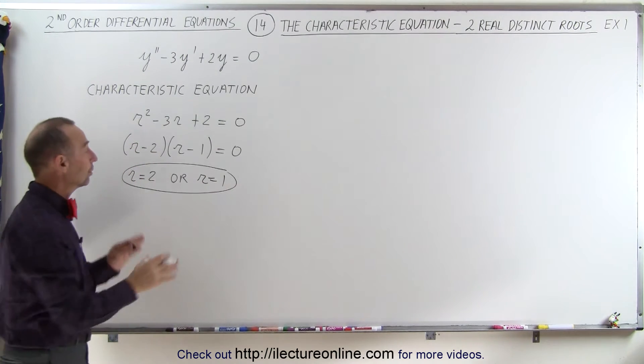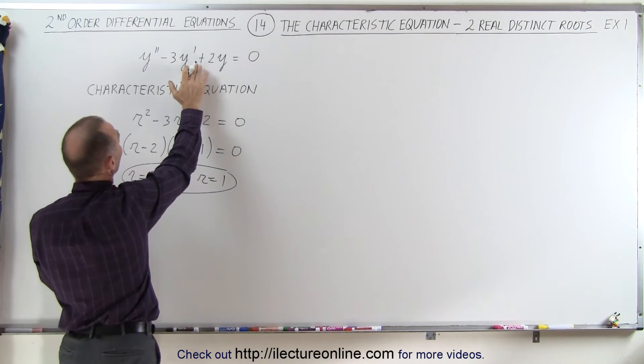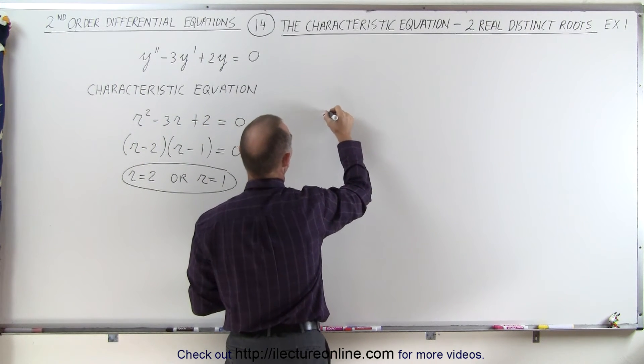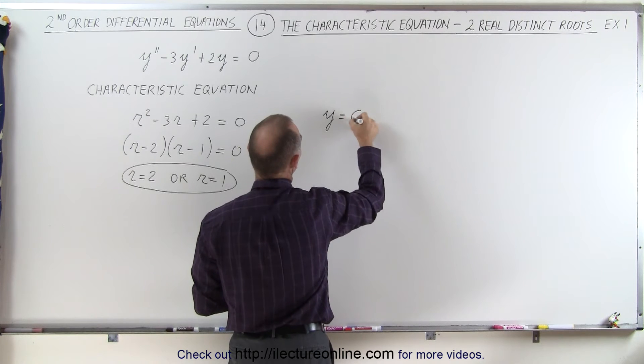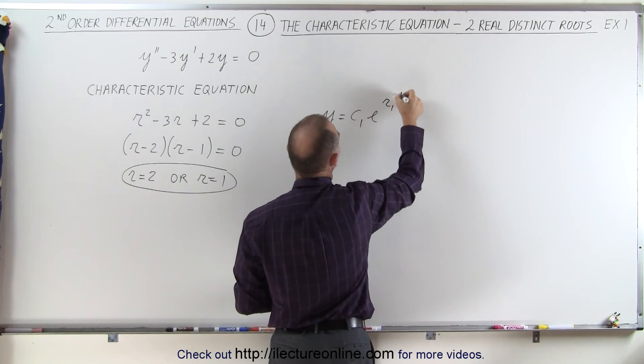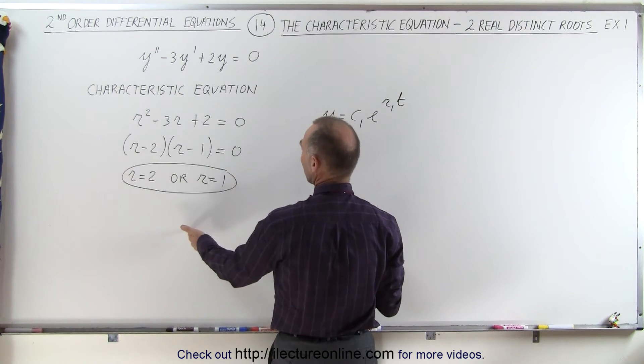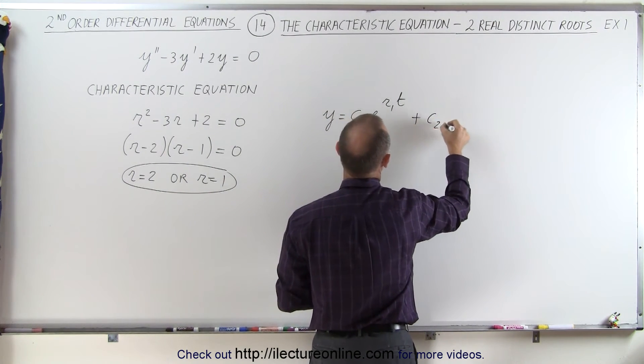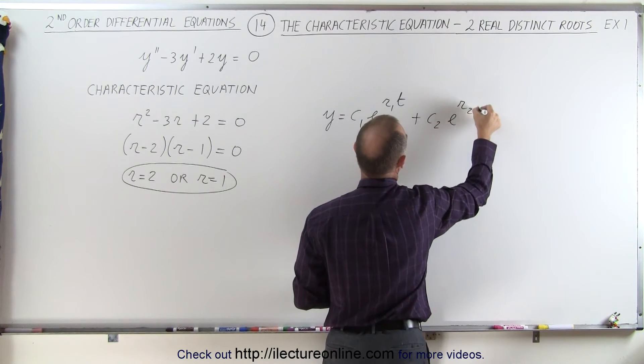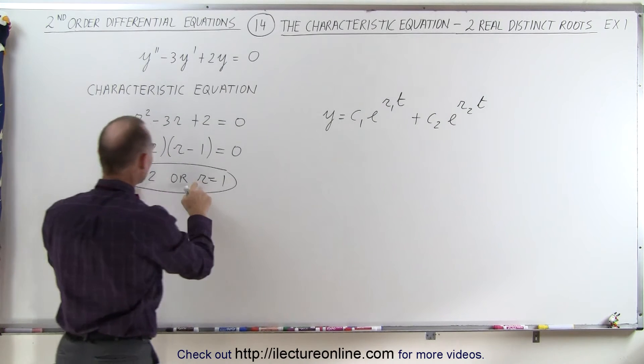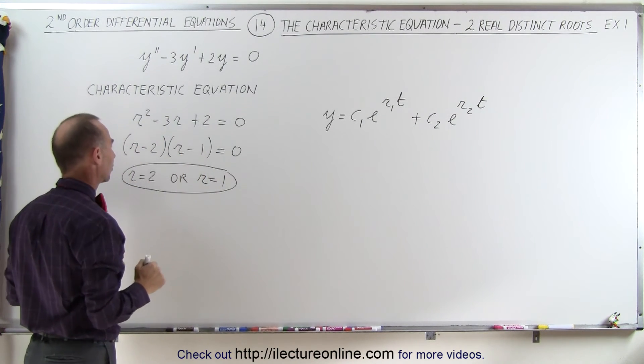Now, to turn that into the solution set for this differential equation, we know that the general solution is y = c₁e^(r₁t) + c₂e^(r₂t), where r₁ and r₂ are the two roots of the characteristic equation, assuming this is a function of t.